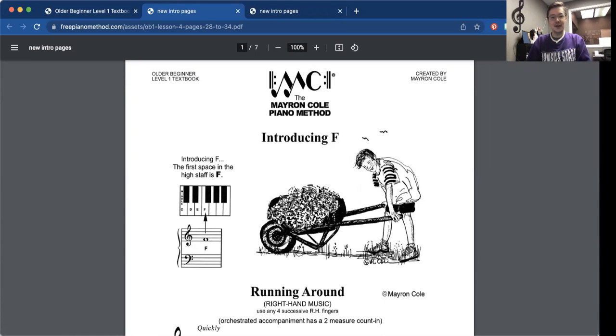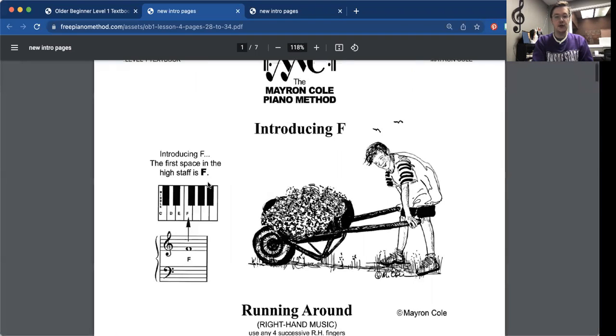Welcome to the video for lesson four of the Marion Cole Older Beginner Level One book. This lesson is going to encompass pages 28 to 34, and we're going to start off with introducing F.